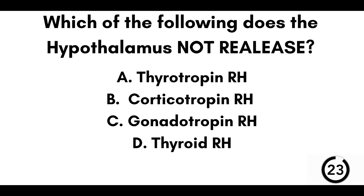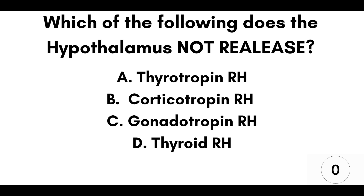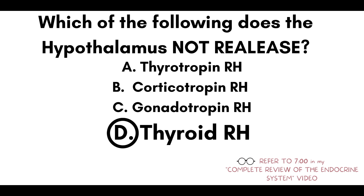Question number three: which of the following does the hypothalamus NOT release? A) Thyrotropin releasing hormone. B) Corticotropin releasing hormone. C) Gonadotropin releasing hormone. Or D) Thyroid releasing hormone. Our answer here is D, thyroid releasing hormone. All other hormones mentioned here are released by the hypothalamus.